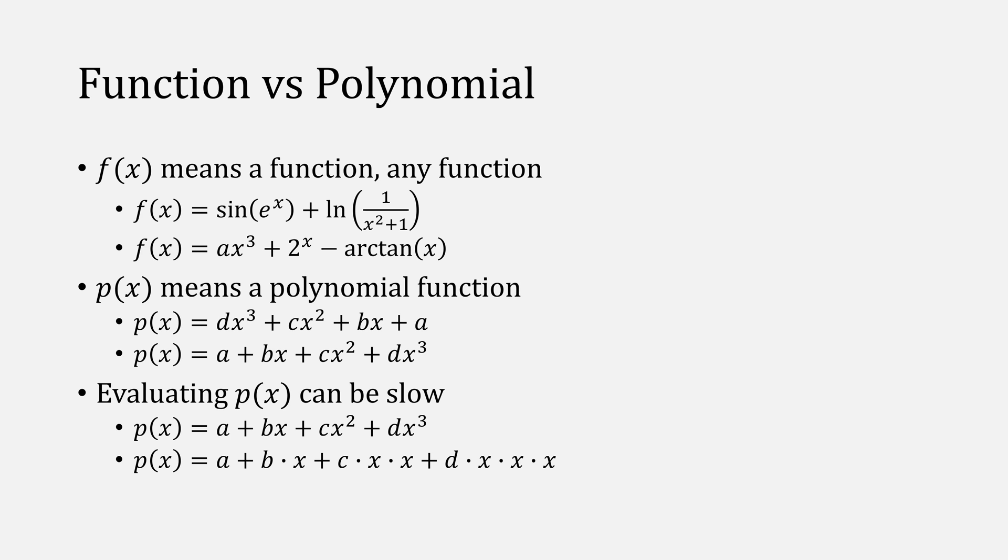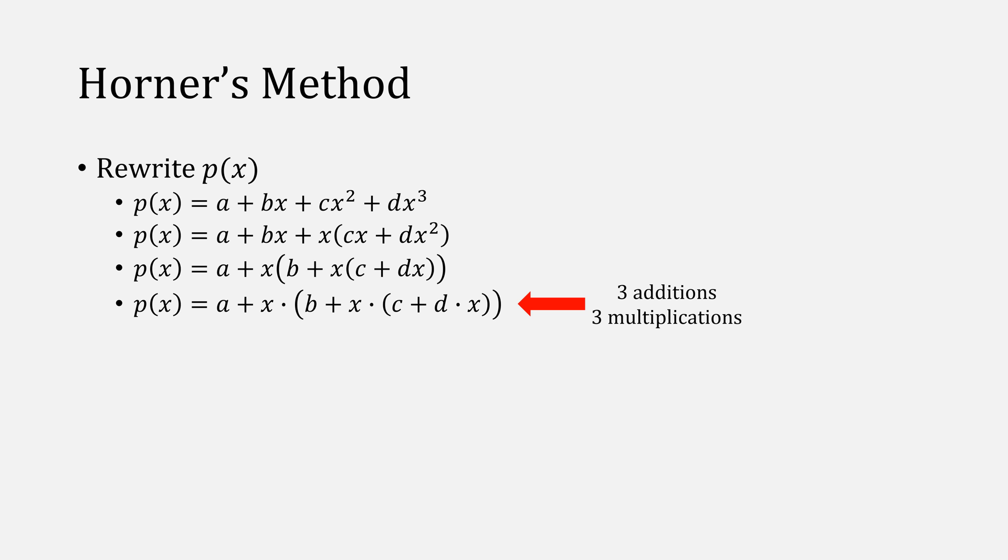When we evaluate a polynomial, this can be slow, and notice that the last operation requires three additions and six multiplications. So every x to the n term adds n more multiplications. The idea behind Horner's method is that we'll rearrange our polynomial. So if our polynomial looks like this, we can factor out an x from the last two terms and factor out an x again. This leaves us with three additions and three multiplications, so it's a lot faster.